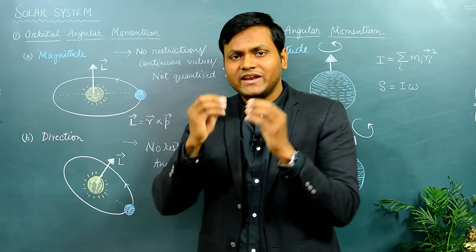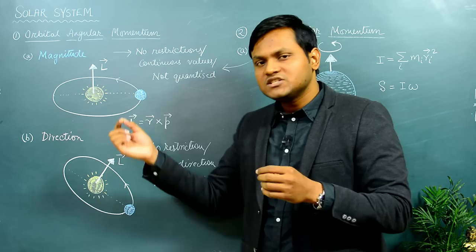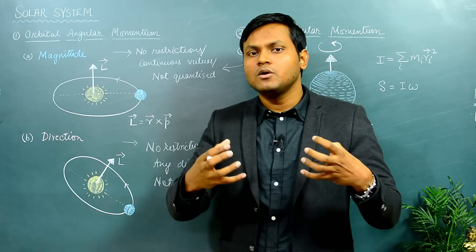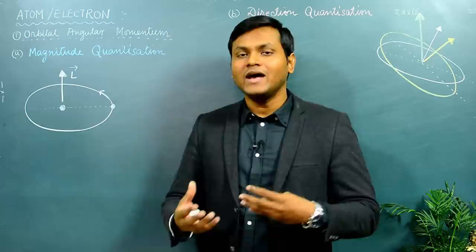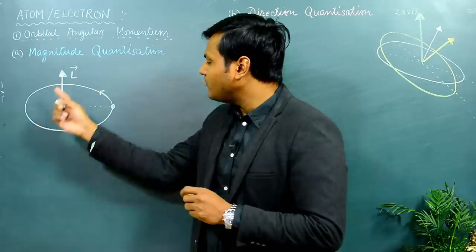However, as we go into the quantum world and look at an electron revolving around the nucleus, the electron is not allowed to have any arbitrary magnitude of angular momentum or to revolve such that the angular momentum is directed in any direction in space. The electron faces a large number of restrictions, which is also known as quantization. The solution of the Schrödinger equation for an electron in an atom results in certain quantum numbers that put restrictions on the magnitude and direction of the angular momentum.